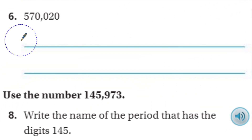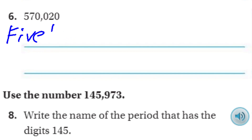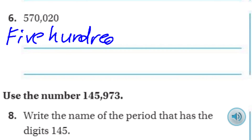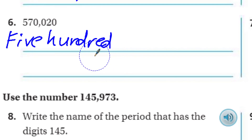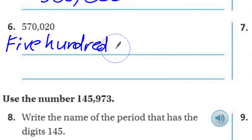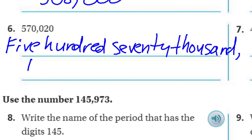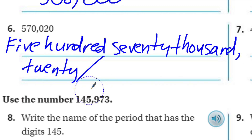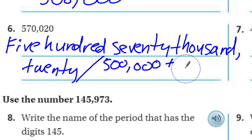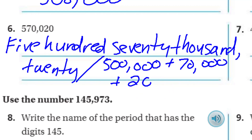Number six is in standard form: 570,020. Word form: five hundred seventy thousand, twenty. Expanded form: 500,000 + 70,000 + 20. There's nothing in the thousands place, so we skip that.